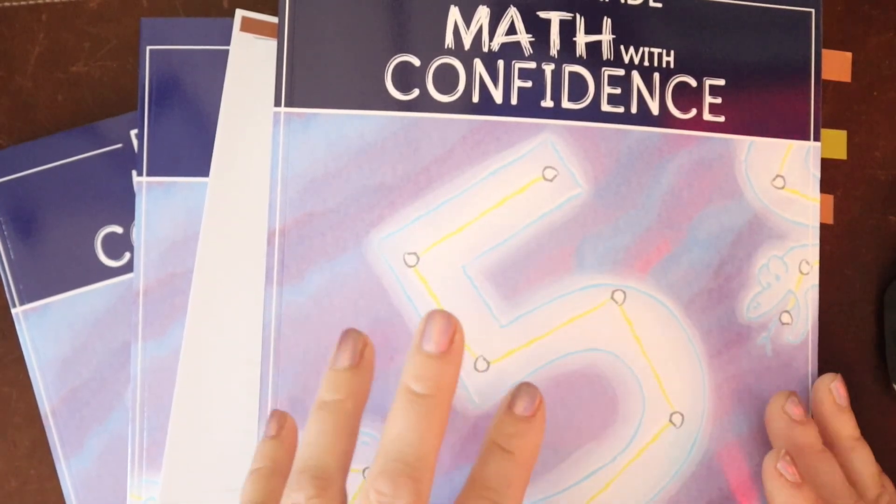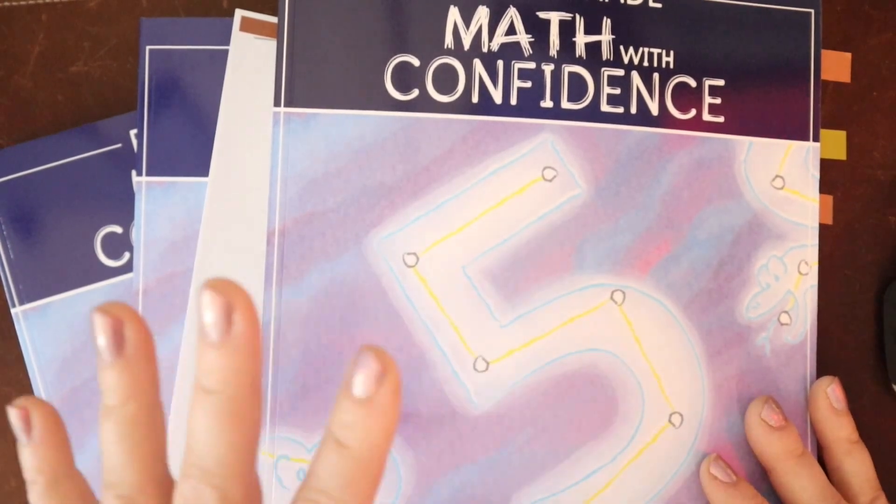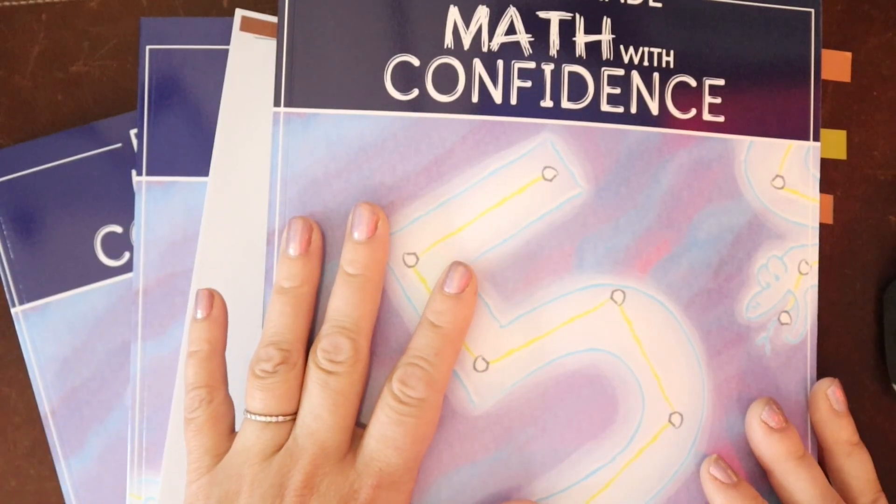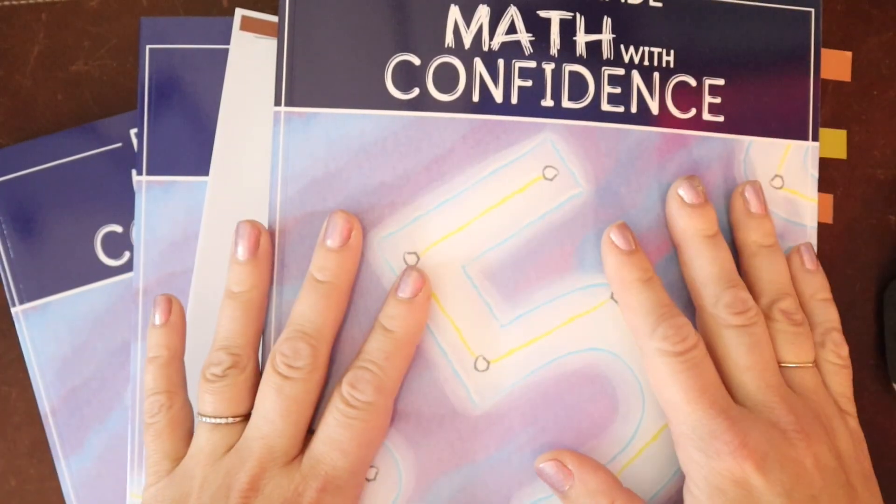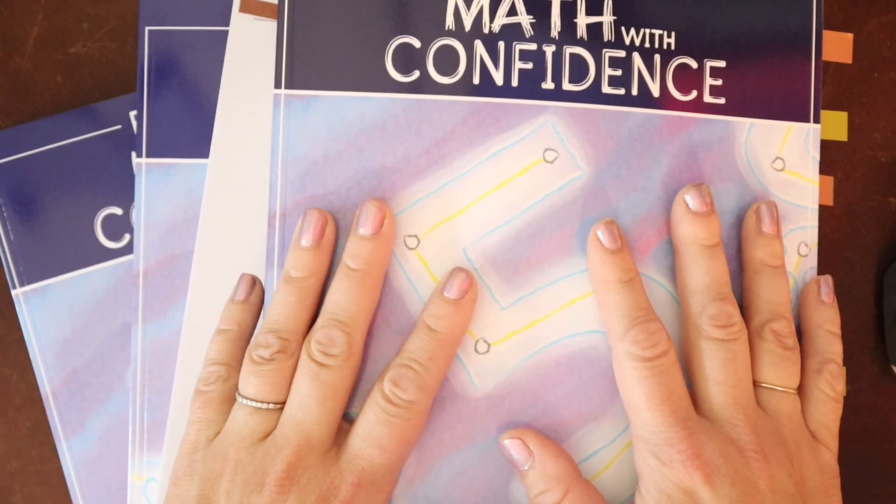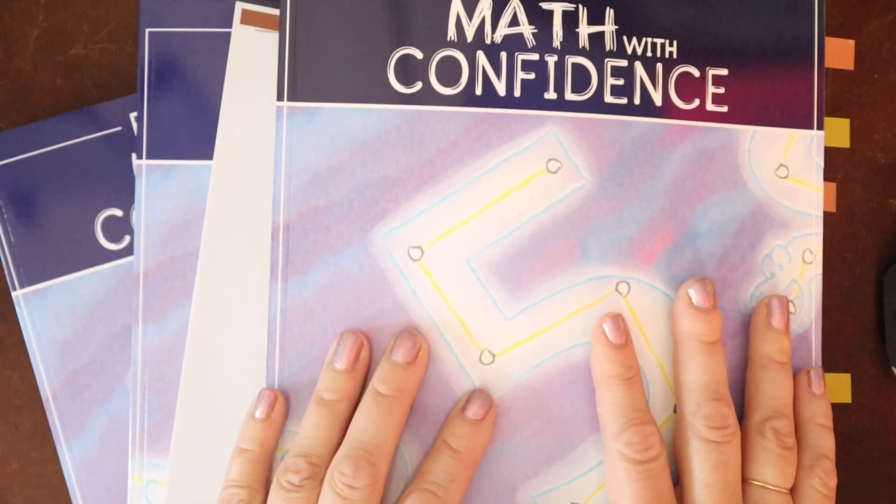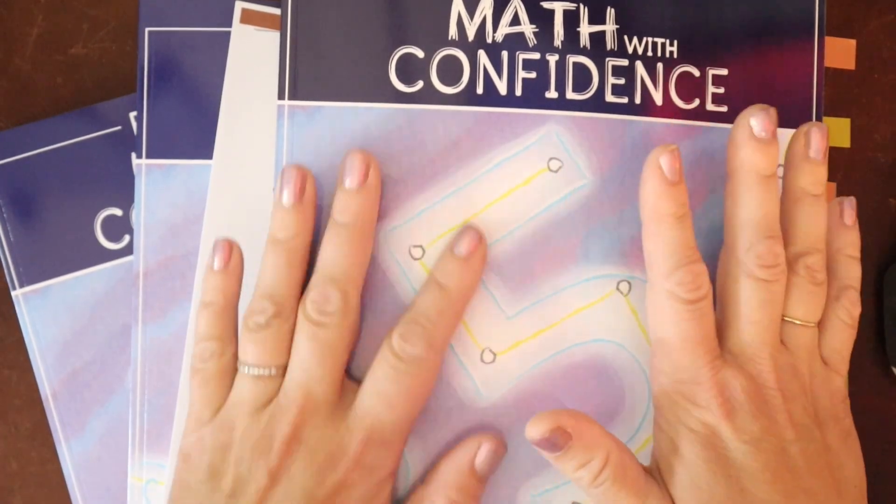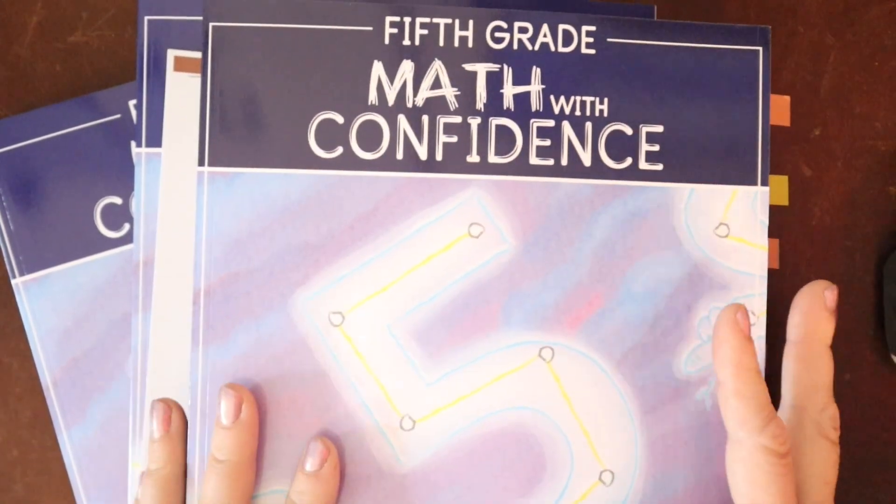Now this program has one more level until the program is complete. Level 6, grade 6, will come out next year. So this has been a slow release. Each year a new level has been published. If you are interested in looking at the previous levels, I will link all of those reviews below. I have reviews and flip-throughs for all of those. So let's dive in.